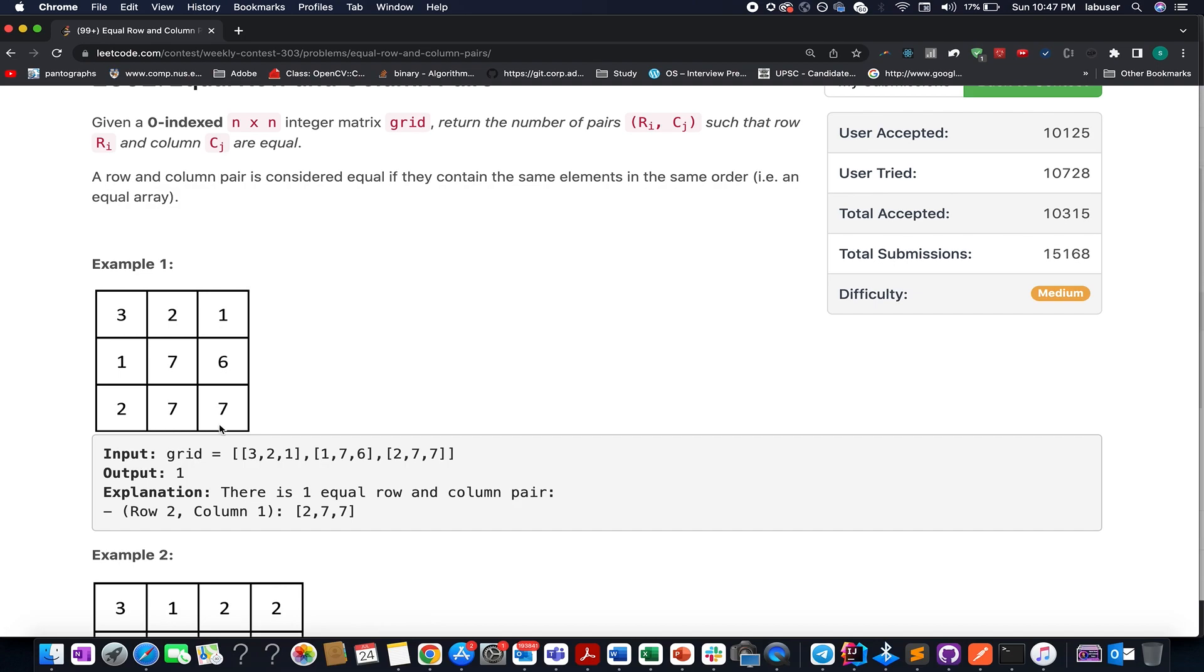So this is the third row, and if you carefully look, it has the same elements as the second column 277. As a result, we identified one such pair, the answer becomes 1.